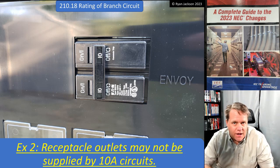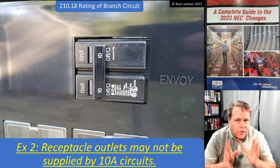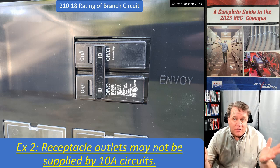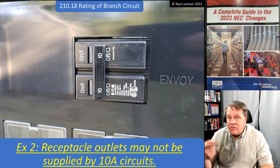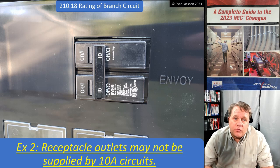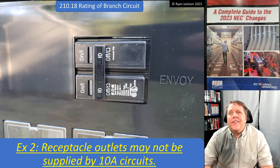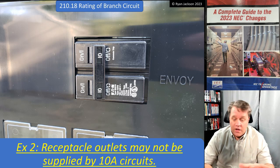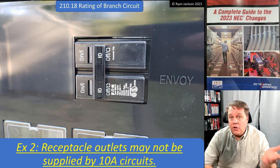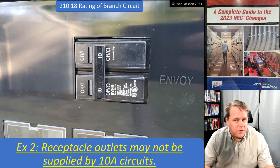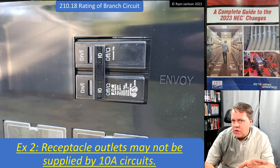We're going to allow 10-amp circuits because we're using LEDs. Your whole house probably doesn't pull 10 amps worth of lighting anymore — maybe 30 years ago it did, but not in 2023. So why not allow 10-amp circuits for lights? That's what this is saying and it's recognizing it. You want to use 10-amp circuits, go ahead, but you can't use them for receptacle outlets. There are more restrictions in 210.23.